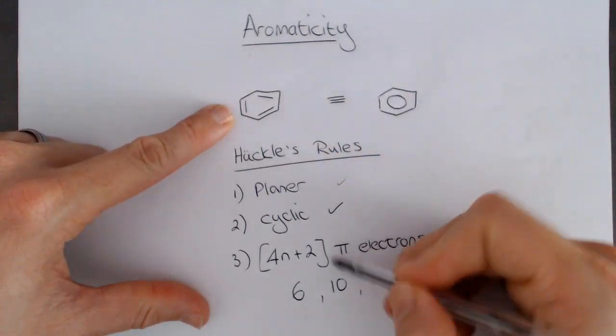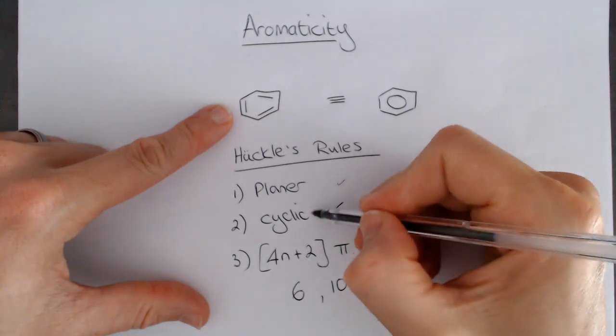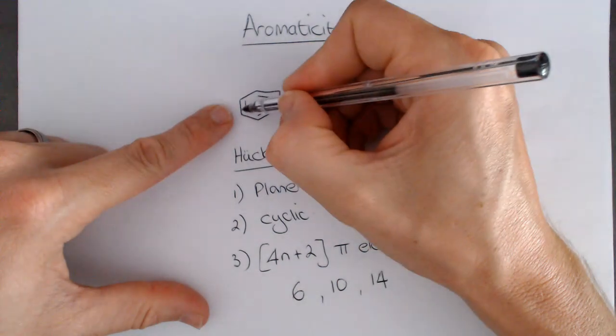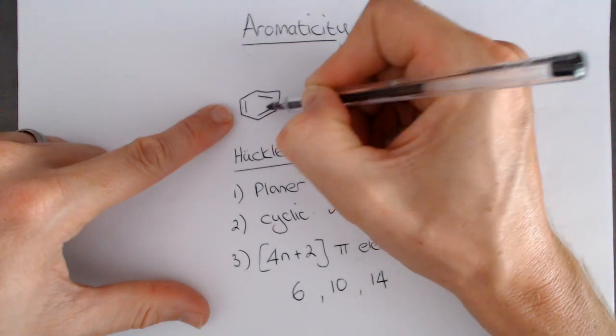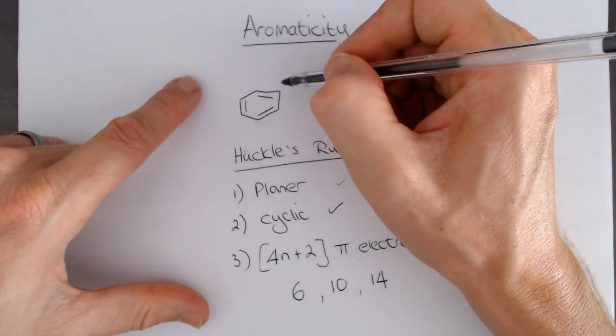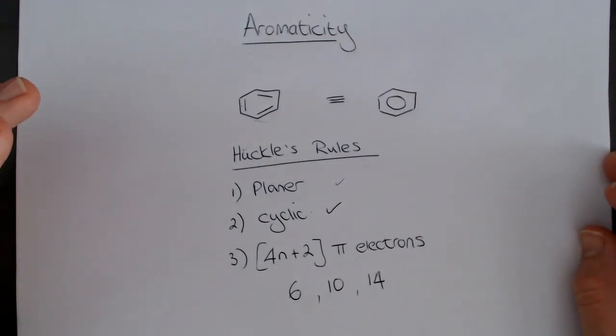So, benzene, we can see, in terms of the pi electrons involved in this planar system, it's planar, it's cyclic. We have 2 electrons in this pi bond, 2 electrons in this pi bond, 2 electrons in this pi bond. There are 6 pi electrons in this, and it satisfies Huckel's rule, and so, therefore, must be aromatic.